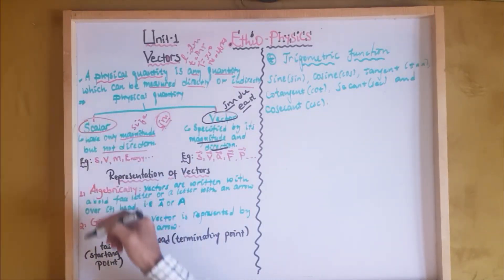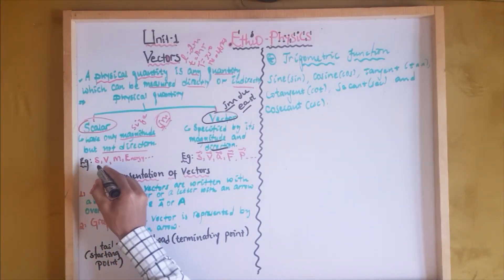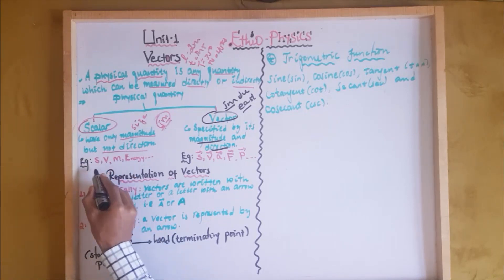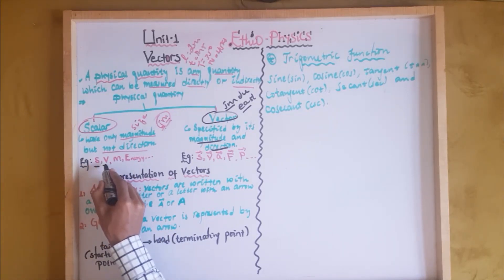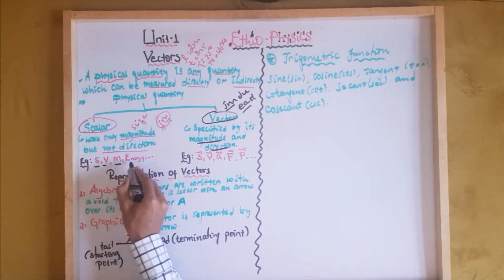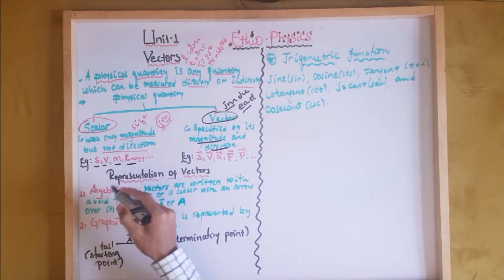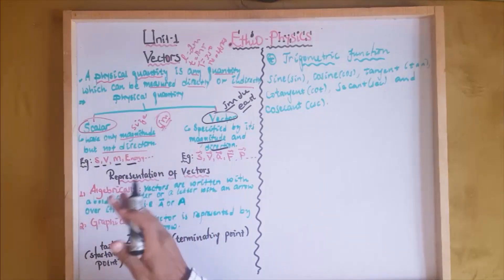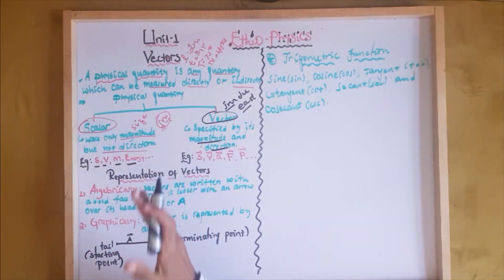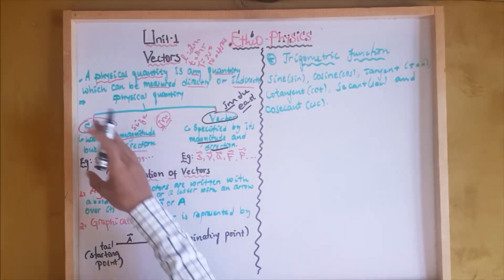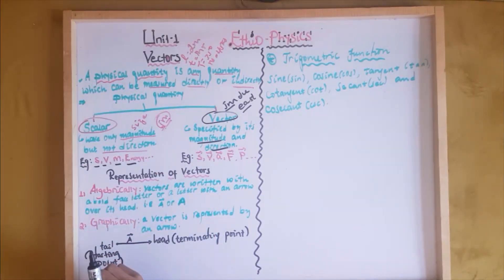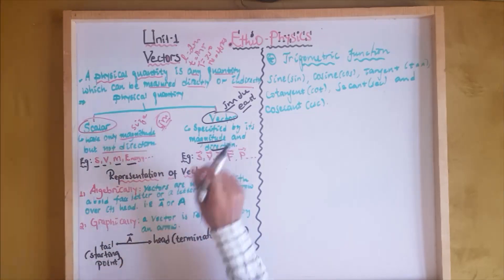So let's take some examples of scalar quantities. For example, you can take distance, speed, mass, energy, pressure, current, amount of substance, temperature, and time.